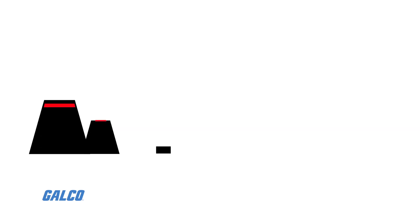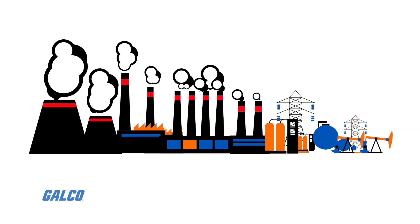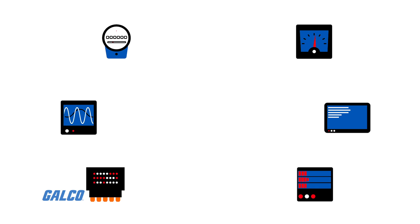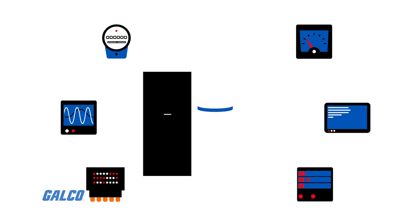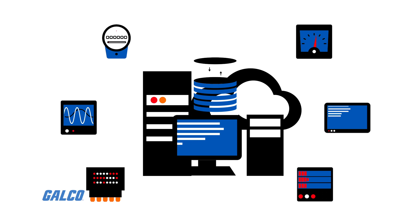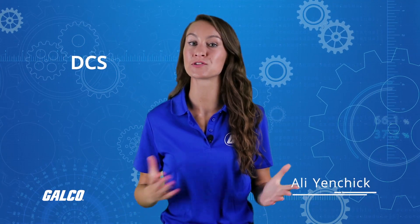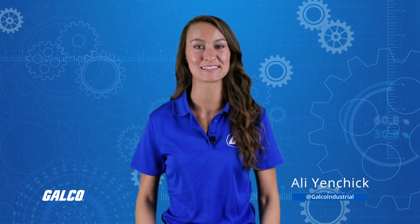A distributed control system is a computerized control system for a processor plant, typically with many control loops, in which autonomous controllers are distributed throughout the system. But there is a central operator supervisory control. Here's Allie, our DCS expert with more. A DCS includes both software and hardware elements.